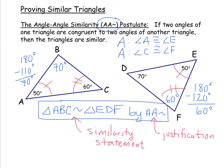There's also the angle-angle-angle similarity postulate, but if two angles in one triangle are congruent to two angles in another, the third angles are forced to be congruent anyway. So it's actually unnecessary — the angle-angle similarity postulate is enough.